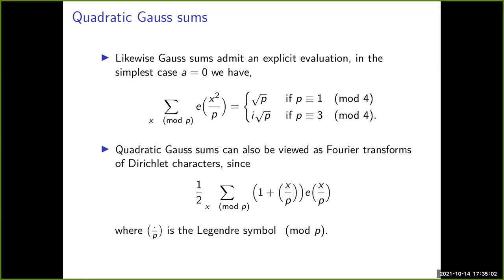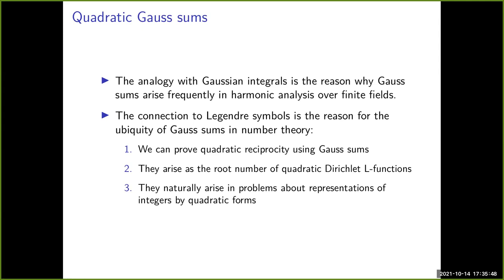One nice thing about Gaussian integrals is that we can compute them explicitly by completing the square, then squaring the integral with the usual change of variable. This suggests that the p-adic analogs should also have an explicit evaluation, and that is indeed the case. Gauss himself found an explicit formula: if p ≡ 1 mod 4 it's √p, and if p ≡ 3 mod 4 it's i√p.